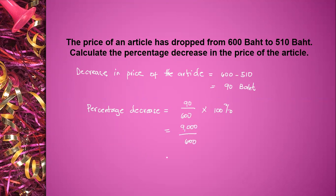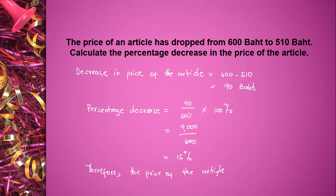So 90 times 100 is equal to 9,000, divided by 600, is equal to 15%. Therefore, the price of the article has decreased by 15%.